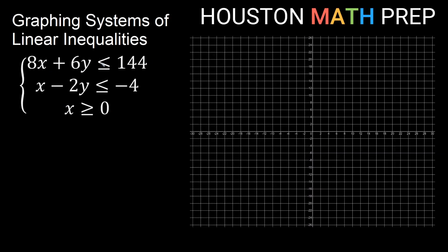Here's another system: 8x plus 6y less than or equal to 144, x minus 2y less than or equal to negative 4, and x greater than or equal to 0. Notice I don't have both x and y greater than or equal to 0, so this does not put us in quadrant 1 by itself. x greater than or equal to 0 means to the right of the y-axis, so we're in quadrants 1 or 4, but not just quadrant 1.